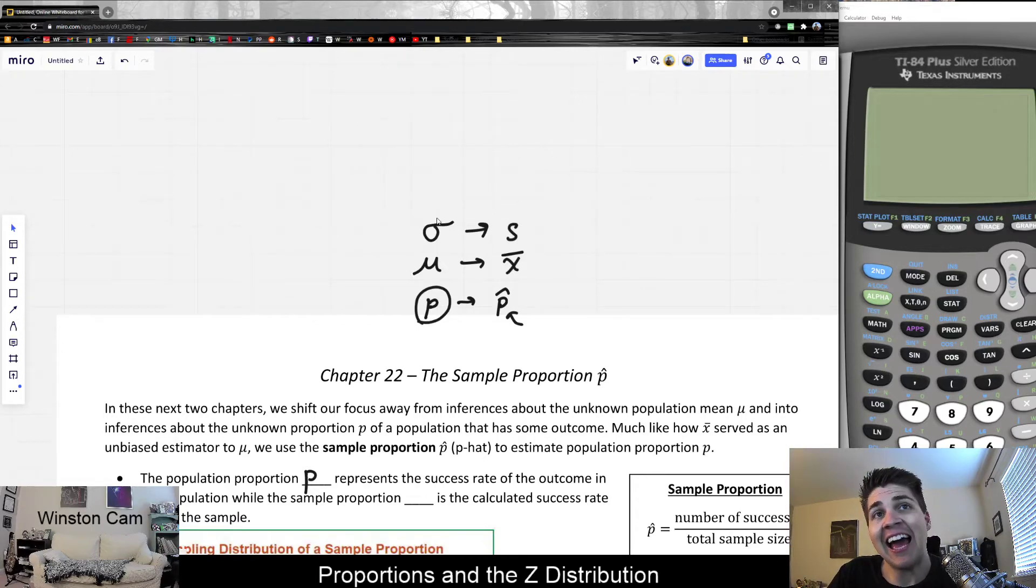Whereas p, just p without the hat, would stand for the actual proportion. The actual proportion of people that brush their teeth every day is maybe 70%. We can use a sample value to estimate that of the actual value, which we do not know.